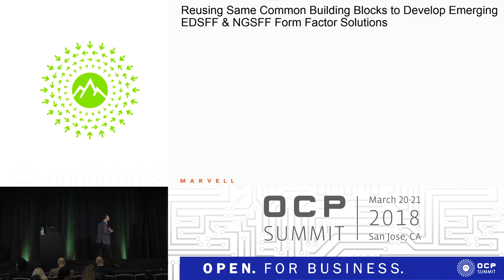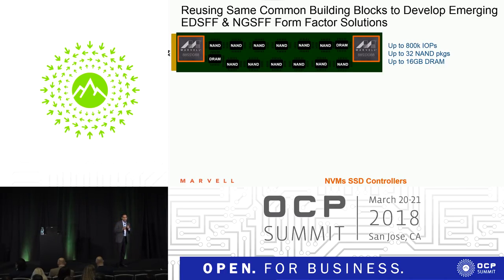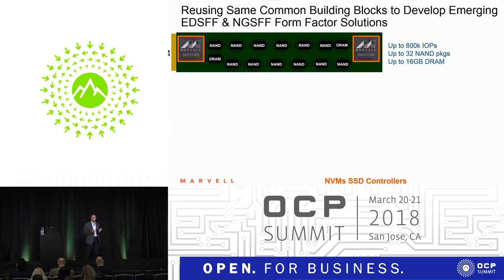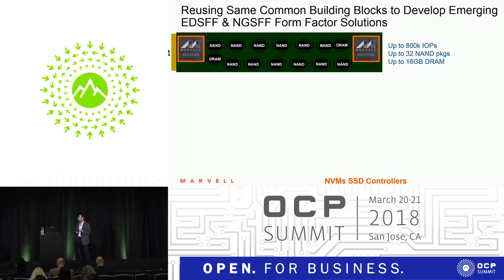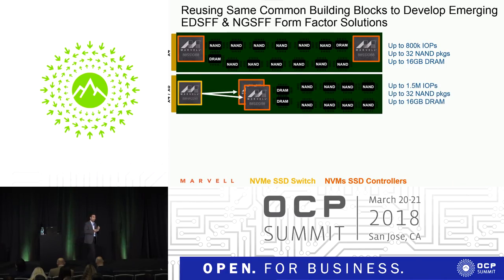How does this scale into the new form factors? You've got the Ruler — or EDSFF — where we're showing an example where you take two Marvell controllers and can create a drive that scales up to 800K IOPS with up to 32 NAND packages and supporting up to 16 gigabytes of DRAM. Assuming your NAND die is 500 gigabits, you'll be able to do a 16 terabyte drive. If you have a one gigabit die, you'll be able to do 32 terabytes — that's a lot of storage packed in there. Similarly, if you want more performance, use our NVMe switch that virtualizes the storage behind it and you get up to 1.5 million IOPS.